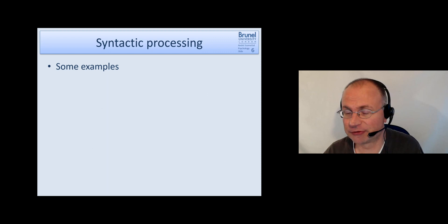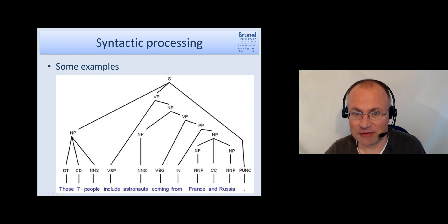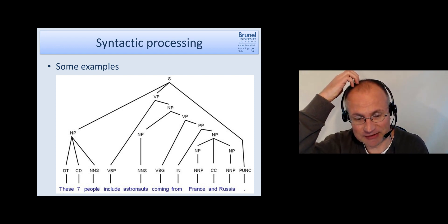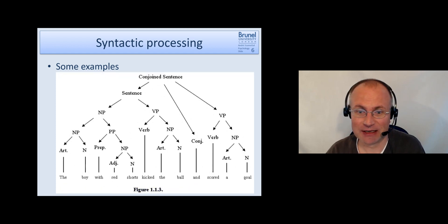Some examples which I just found on the web to illustrate how complex such trees can be. This is the tree for the sentence: the angry bear chased the frightened little squirrel. If you want to have a look at this in detail just pause the video. Another example: these seven people include astronauts coming from France and Russia. The boy with red shorts kicked the ball and scored a goal, which is quite a typical sentence in everyday language. You see how complex such trees can get.